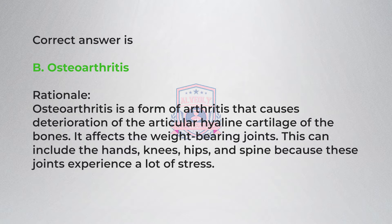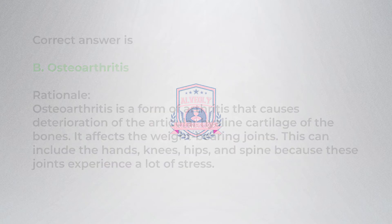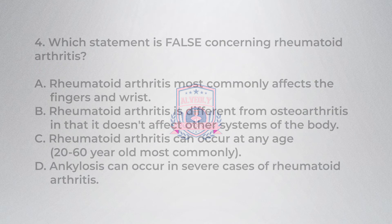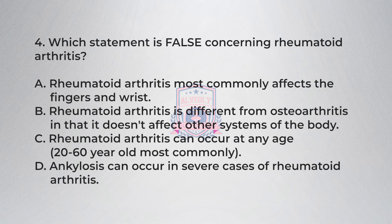Rationale: Osteoarthritis is a form of arthritis that causes deterioration of the articular cartilage of the bones. It affects the weight-bearing joints, which can include the hands, knees, hips, and spine, because these joints experience a lot of stress.